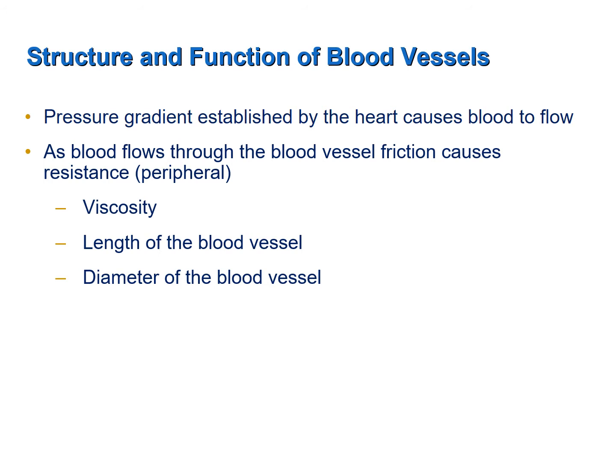As blood flows through blood vessels, friction between the blood and the walls of the blood vessels offers resistance to blood flow, which you learned to be called peripheral resistance. Viscosity, the length of a blood vessel, and the diameter of a blood vessel all affect peripheral resistance. As the viscosity or thickness of the blood increases, peripheral resistance increases. Also, as the length of the blood vessel increases, that will also increase peripheral resistance. And lastly, as the diameter of a blood vessel increases, there is less resistance to blood flow — so increasing diameter decreases peripheral resistance.